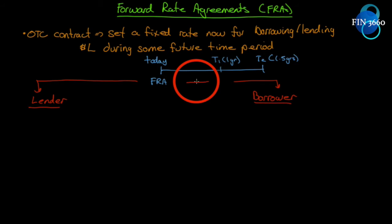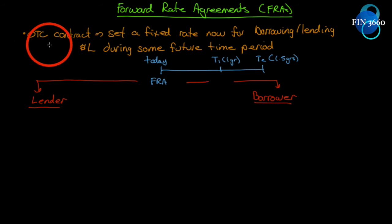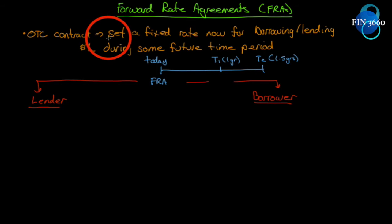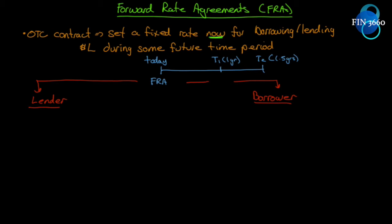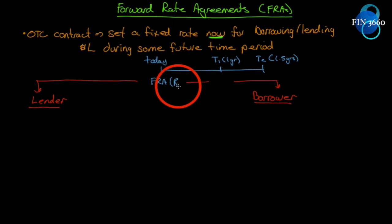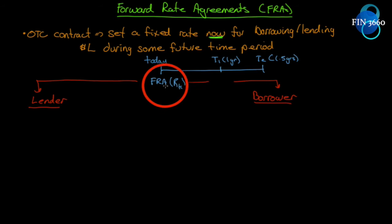Let's set up the conversation here for the forward rate agreement, or FRA. The forward rate agreement is an OTC contract — over-the-counter — meaning it's a dealer market, not exchange traded. The contract sets a fixed rate for borrowing or lending some dollar amount L during some future time period. We enter into an FRA which has a rate RK — K for contract — which is the rate agreed upon in the contract.